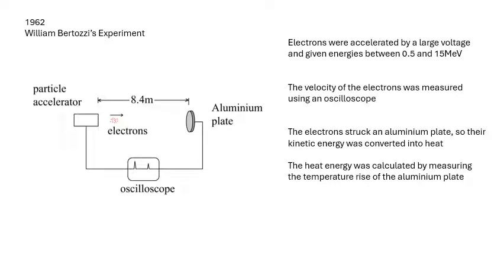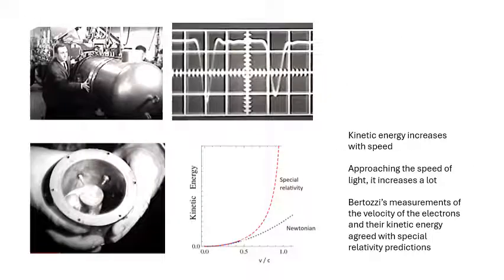Electrons were accelerated by a large voltage, given energies between 0.5 and 15 MeV, mega electron volts. The velocity was measured using an oscilloscope. The electrons struck an aluminum plate so their kinetic energy was converted into heat. The heat energy was calculated by measuring the temperature rise, Q equals mc delta t. His results confirmed special relativity.